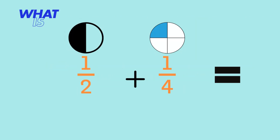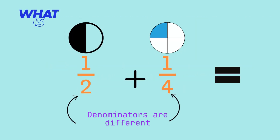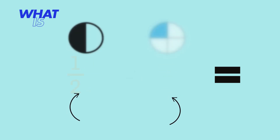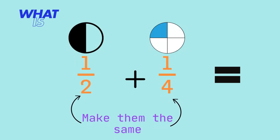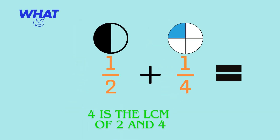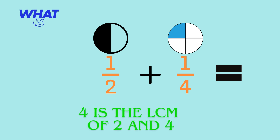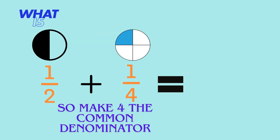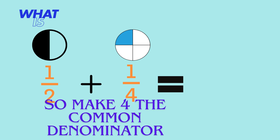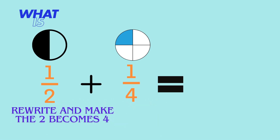Let's calculate one-half plus one-quarter. Notice the denominators are different, so our first task is to make both denominators the same. Four is the LCM of two and four. Therefore, we will make both denominators be four. This means we will now need to rewrite the one-half fraction and make the denominator be four.